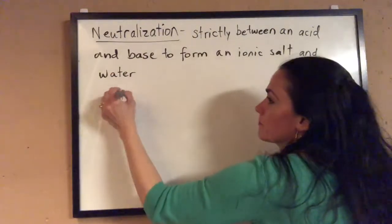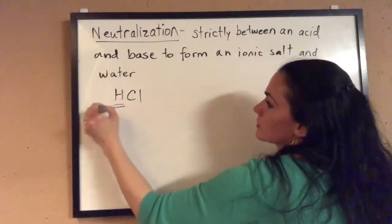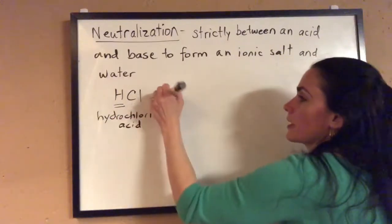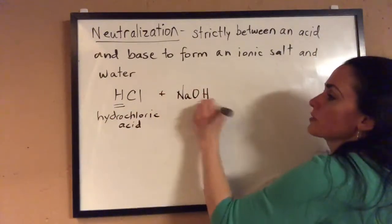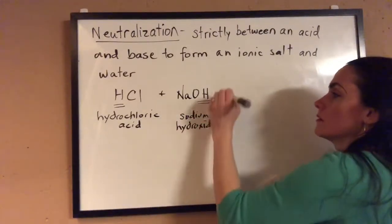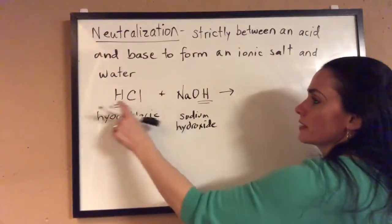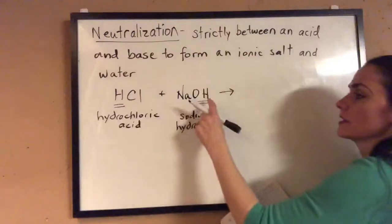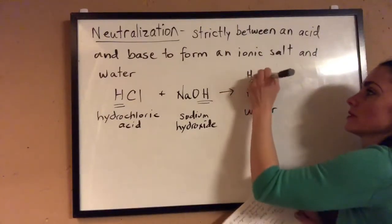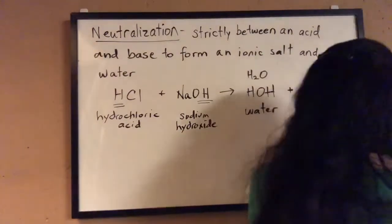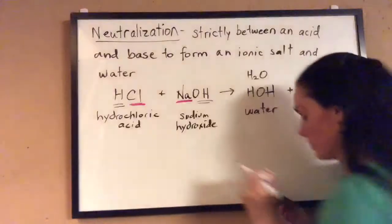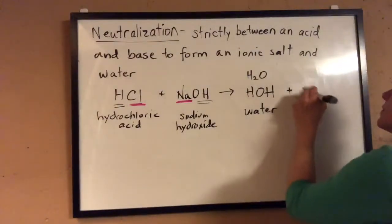Let's say hydrochloric acid reacts with some base — sodium hydroxide. The cations and the anions switch partners. The hydrogen from the acid and the hydroxide from the base join together to form water: HOH, better known as H2O. The other product would be some ionic salt — in this case, sodium with chloride to form sodium chloride.